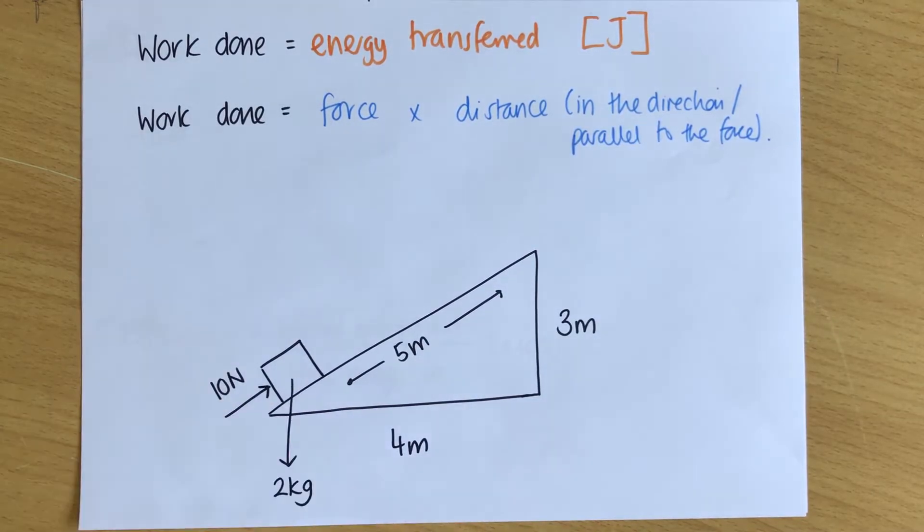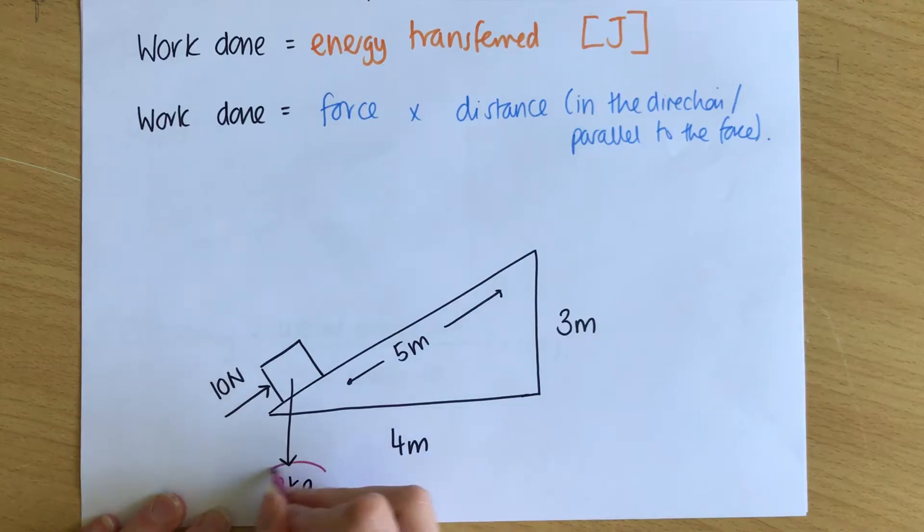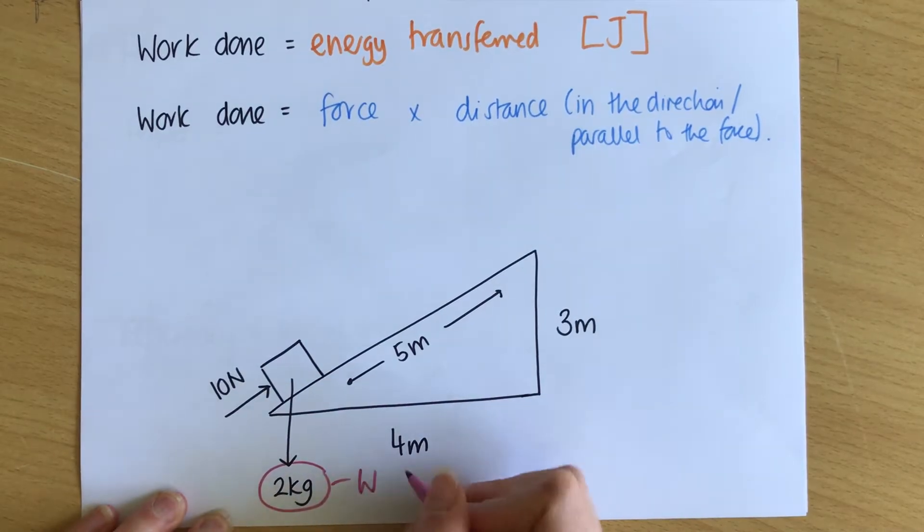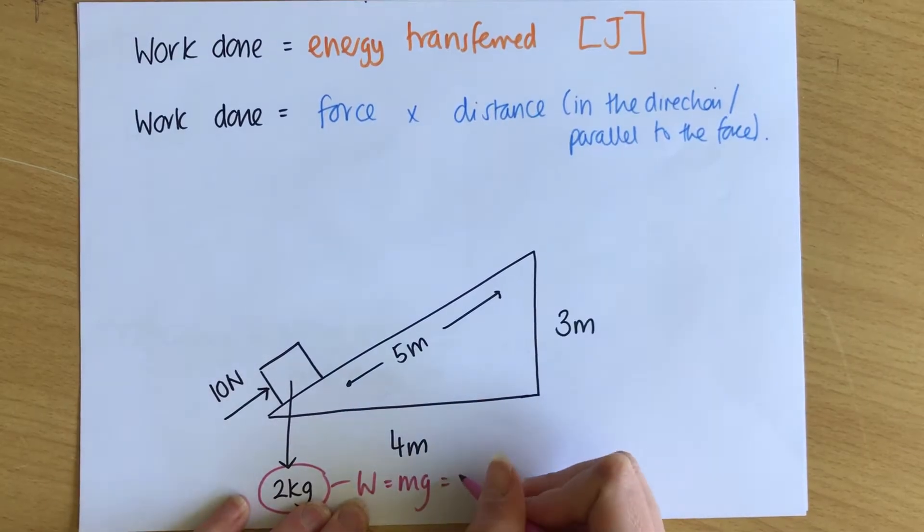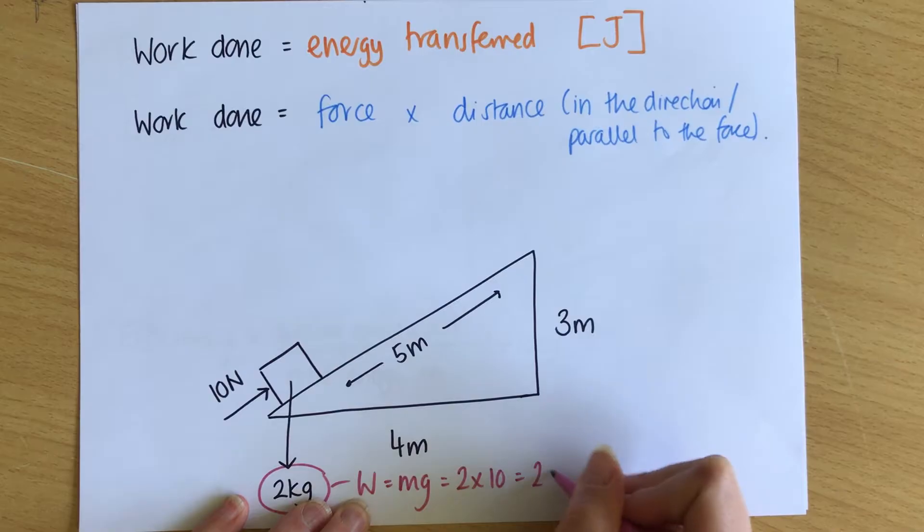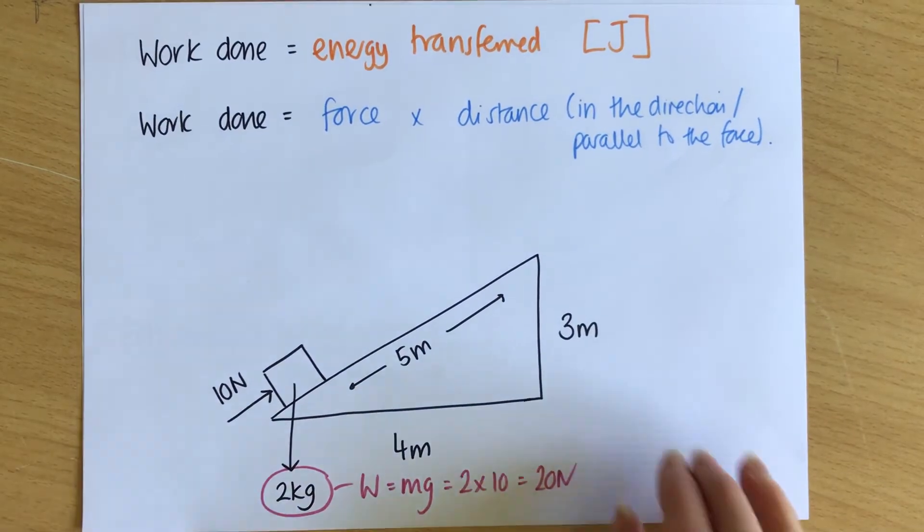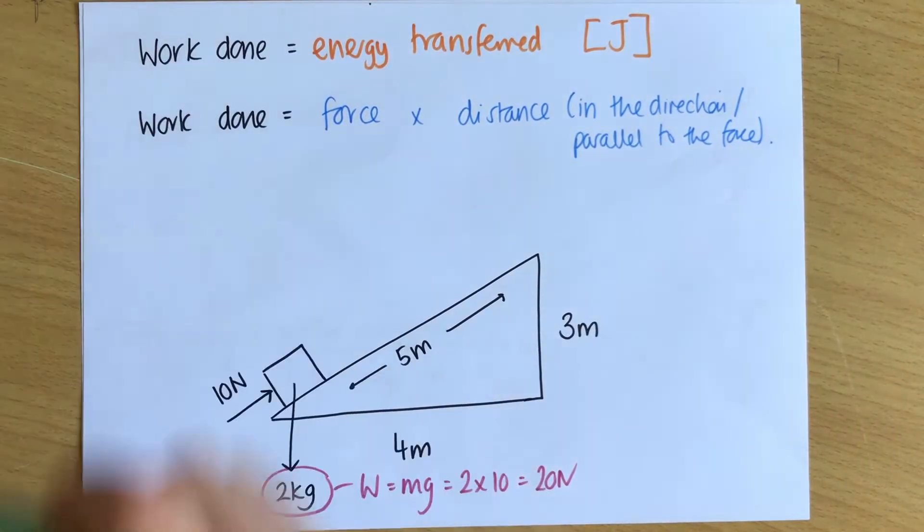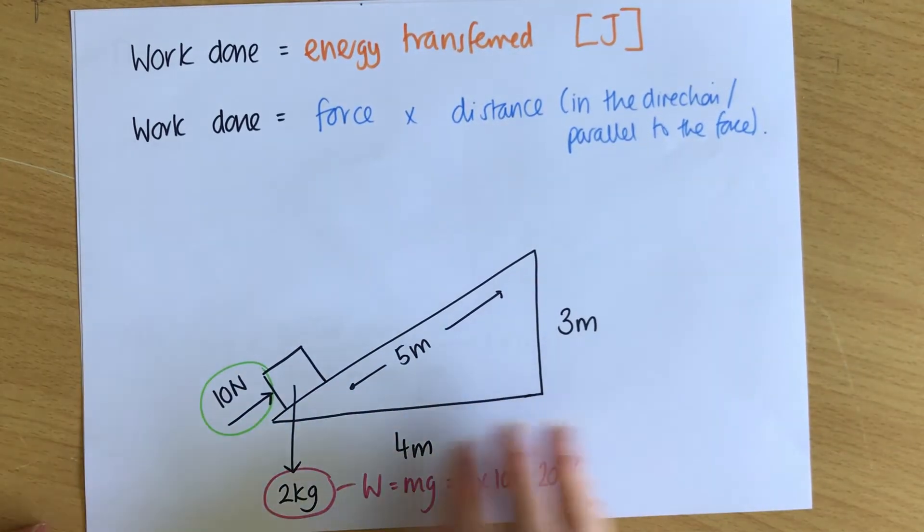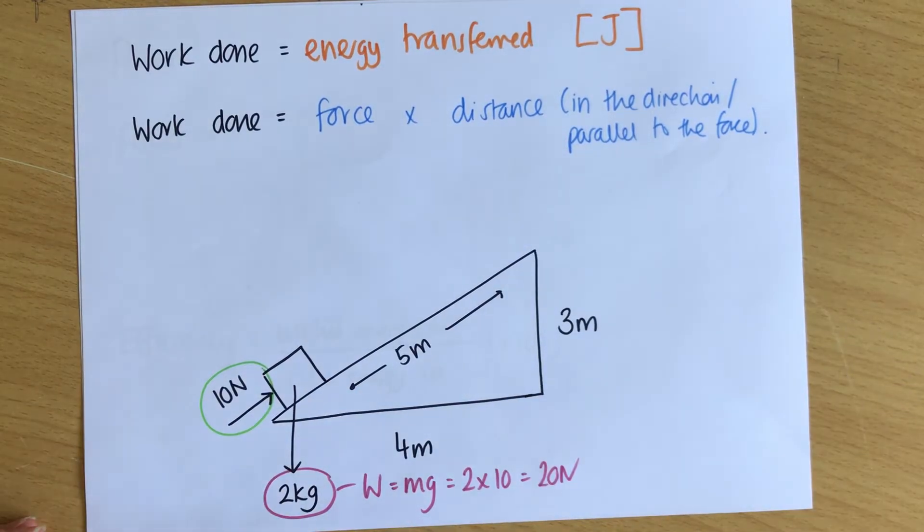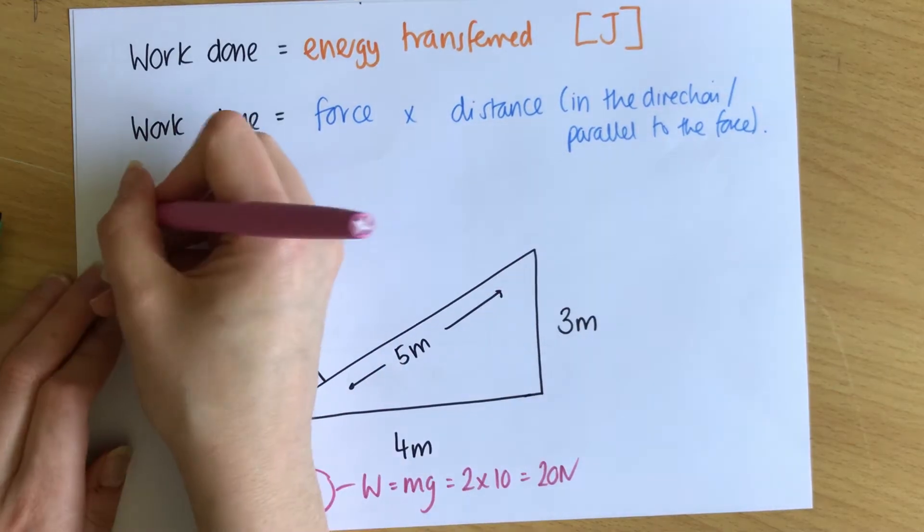And the easiest way to explain that is with an example. So here I've got a box that I'm going to push up a slope. There are two forces at play here. Weight. Now weight equals mass times gravity. So here the weight equals 2 times 10, which is 20 newtons. And there's also friction.